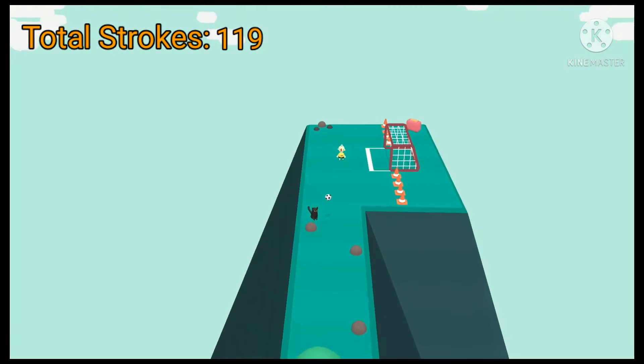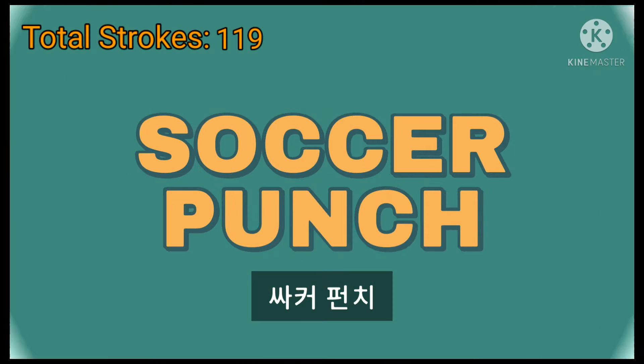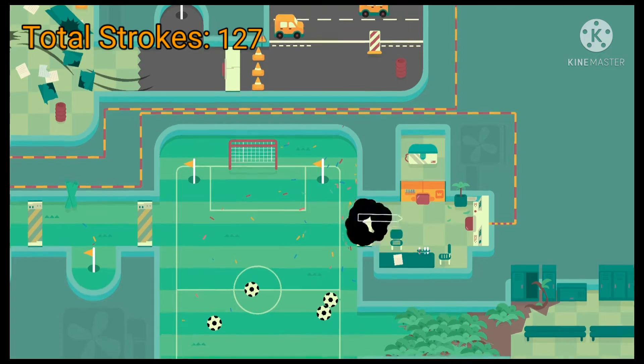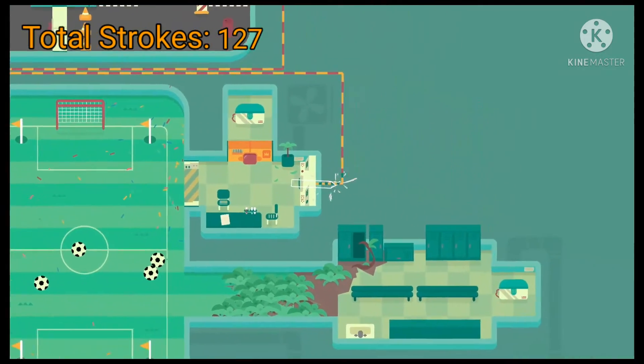Lastly, we have Soccer Punch, which with some slick maneuvering can be beaten in five strokes, plus one stroke to enter. Two more shots and we reach the button, putting our total at one hundred twenty-seven strokes.